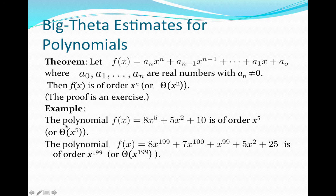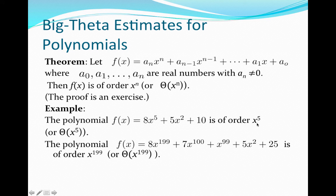Let's look at a specific example. Consider f(x) = 8x⁵ + 5x² + 10. Since this is a polynomial of degree 5, we know by this theorem that it is of order x⁵, or Big Theta of x⁵. I'll leave it to you to think about how you can show, applying the definitions of Big O and Big Omega, that this function has the same order as x⁵.